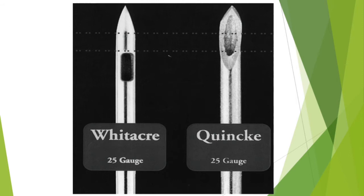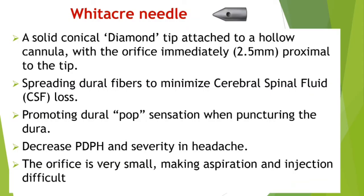Quincke's needle — the prototype for sharp tip needles — has a sharp, medium-length beveled hollow needle. The needle causes more CSF loss, increasing the chance of PDPH. However, since the needle is cheap, it is still used in many parts of the world.